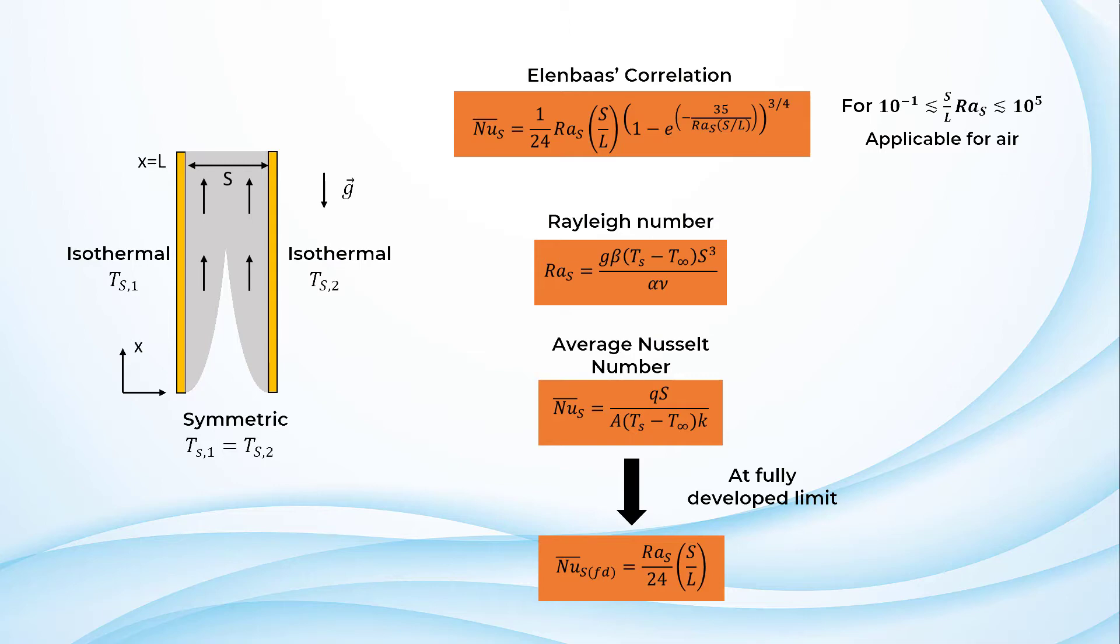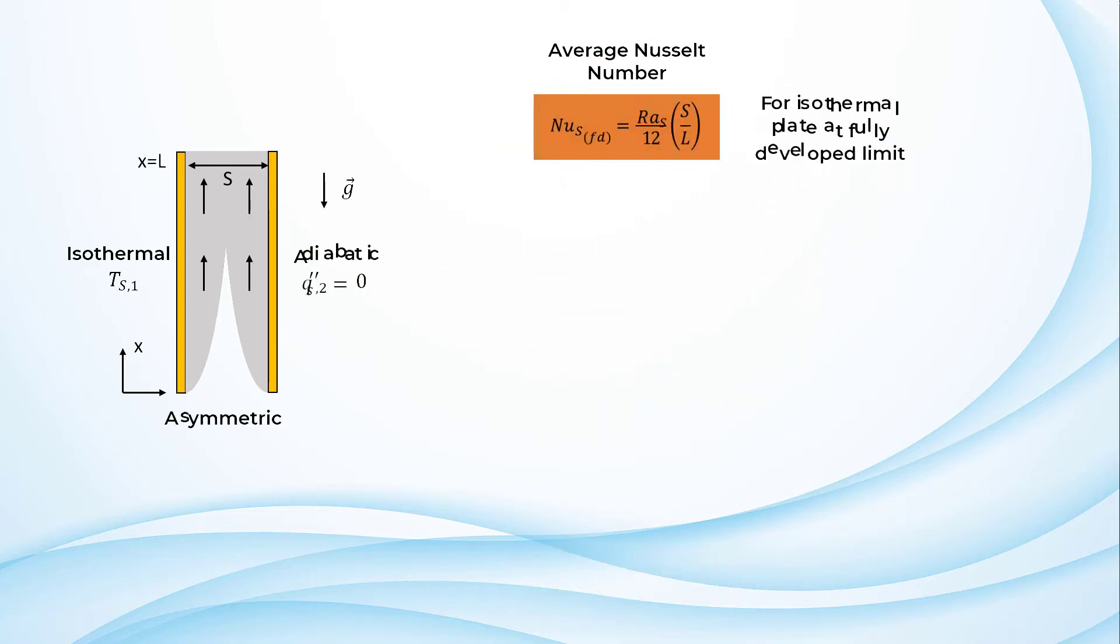For a situation where one of the plates is heated isothermally and the other adiabatically, the average Nusselt number for the isothermal plate can be obtained using the following correlation.